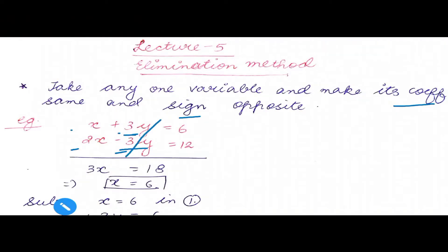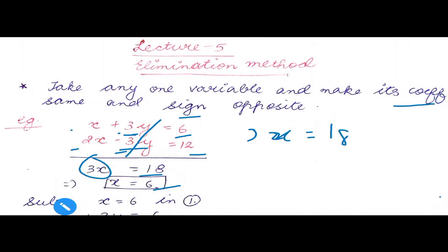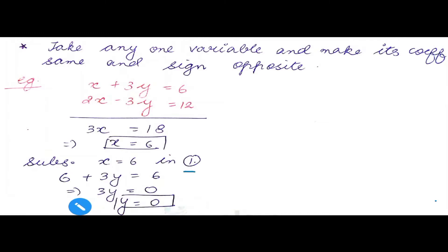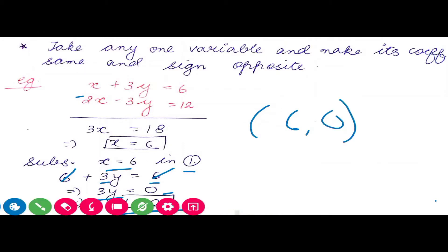We cancel plus 3y and minus 3y. When we add the equations: x plus 2x gives 3x, and 6 plus 12 equals 18, so 3x equals 18, giving x equals 6. Then 3y equals 0, so y equals 0. We get the value and write the solution as (6, 0). So (6, 0) is the solution of this particular problem.